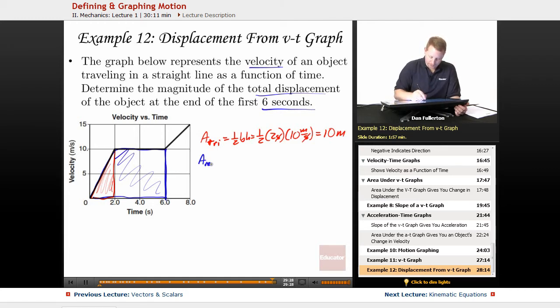And the area of our rectangle, length times width, or from 2 to 6 seconds, is 4 seconds, times its height, 10 meters per second. Seconds over seconds cancel out, 40 meters.